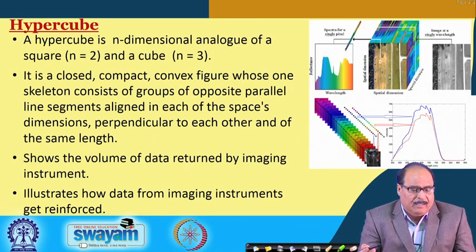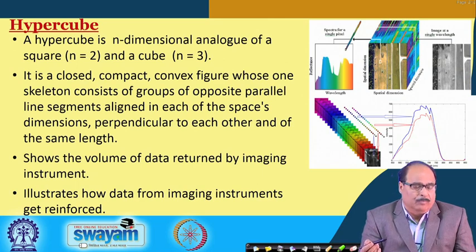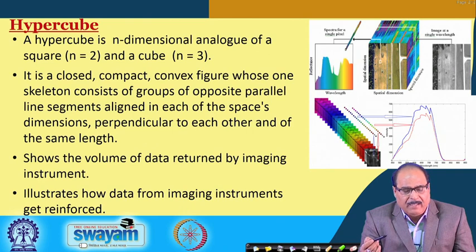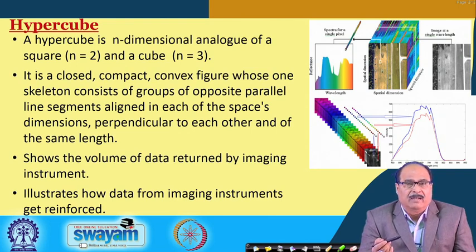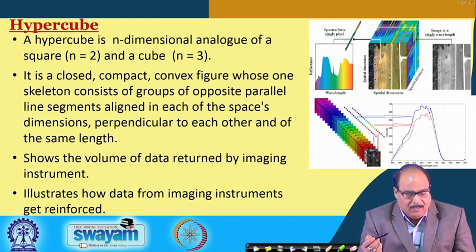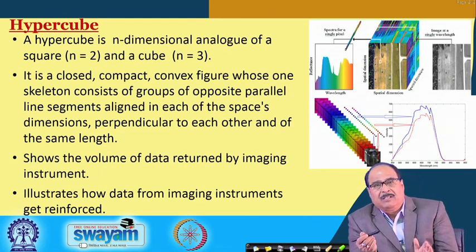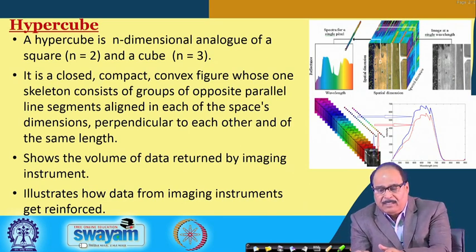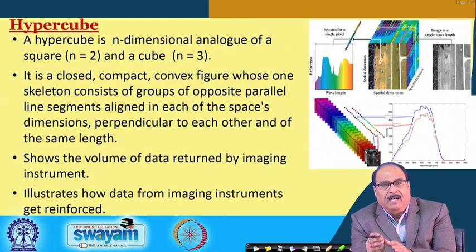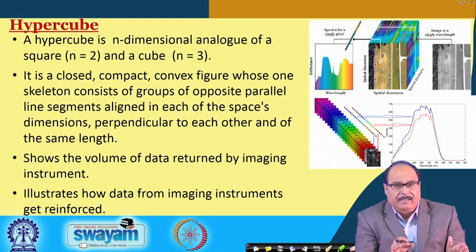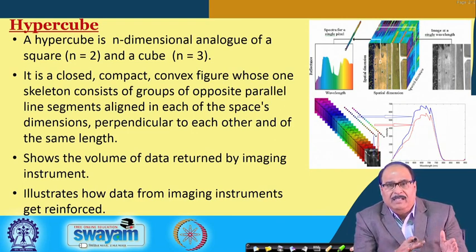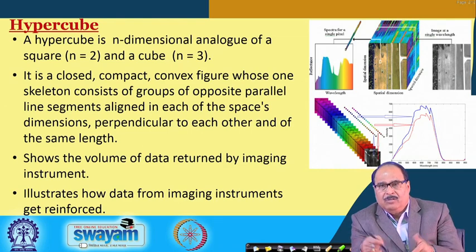The hypercube is basically an n-dimensional analog of a square and cube — it may be square where n equals 2, or a cube where n equals 3. It is a closed compact convex figure whose one-skeleton consists of groups of opposite parallel line segments aligned in each of the space's dimensions, which are perpendicular to each other and of the same length. This hypercube shows the volume of data returned by imaging instruments and illustrates how data from imaging instruments is reinforced to reproduce the image.